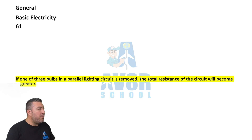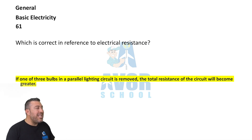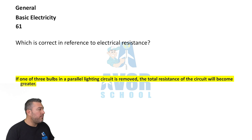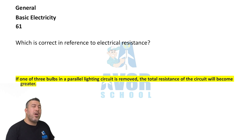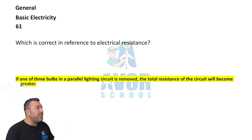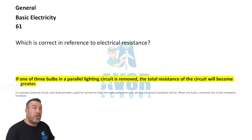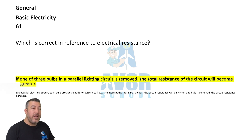If one of three bulbs in a parallel lighting circuit is removed, the total resistance of the circuit will become greater. Which is correct in referencing the electrical resistance. When you want to reference an electrical resistance: if one of three bulbs in a parallel lighting circuit is removed, the total resistance of the circuit will become greater.